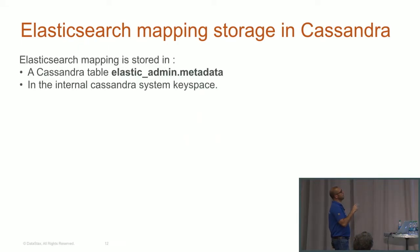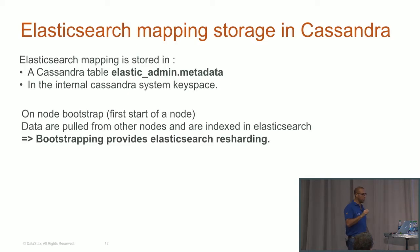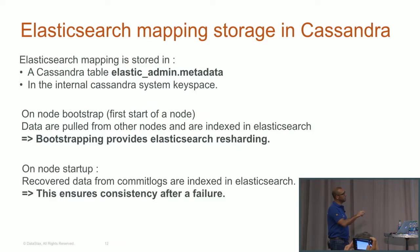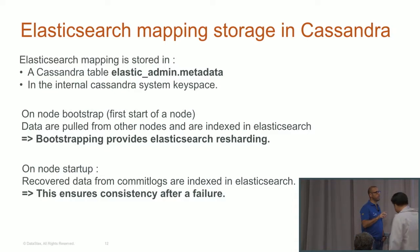The mapping — our data structure — is stored in the Elasticsearch admin metadata table in the Cassandra layer, and also in the system schema keyspace. This allows Elasticsearch services to start very early when a node starts. On bootstrap, it allows pulling data from other nodes and indexing it while pulling, providing a kind of resharding of the Elasticsearch layer. Since we have started the Elasticsearch layer on bootstrap, we can replay commit logs and index data directly. We have removed the Elasticsearch transaction log because it does the same thing as the Cassandra commit log.